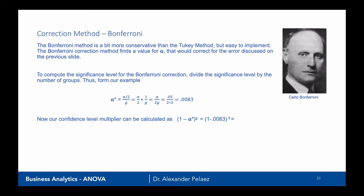The next correction method is the Bonferroni method. It is more conservative than Tukey but very easy to implement. The Bonferroni correction finds a value for alpha that corrects for the error based on the t-test. To compute the new significance level, we divide alpha by the number of groups. We compute alpha-star = alpha divided by 2 (for a two-tail test) times 1/g, which equals alpha over 2g. With alpha = 0.05 and g = 3, that is 0.05 / 6 = 0.0083.